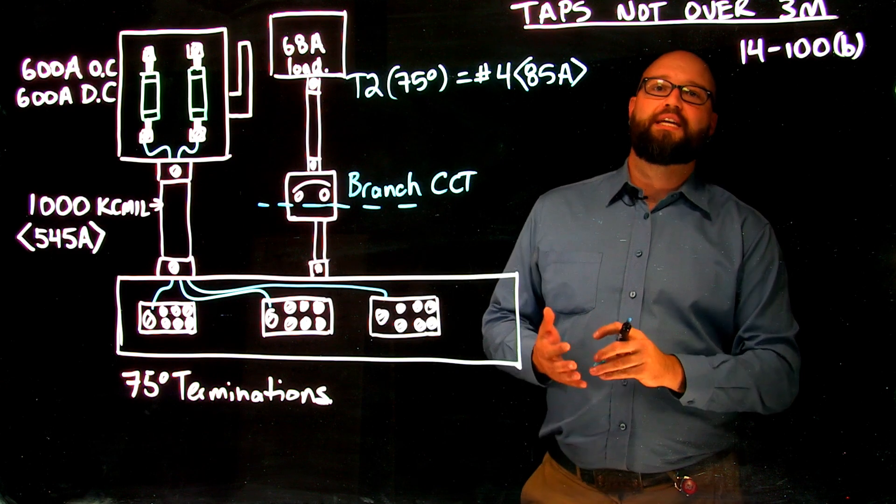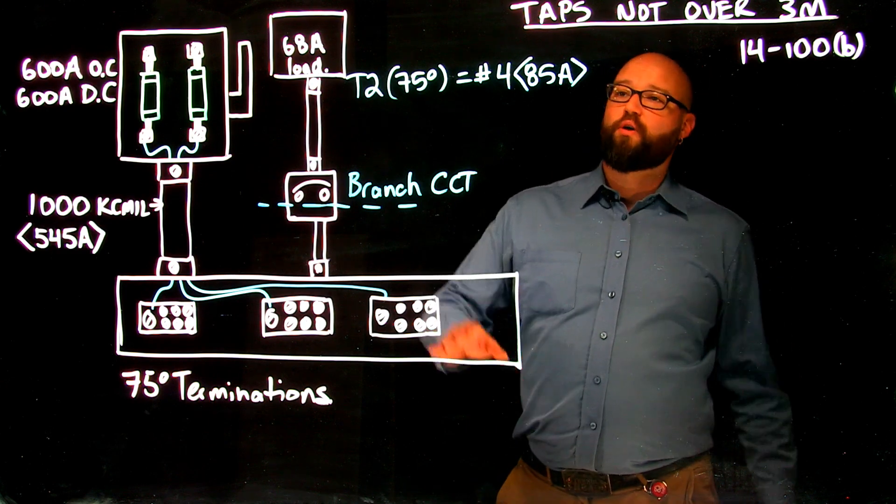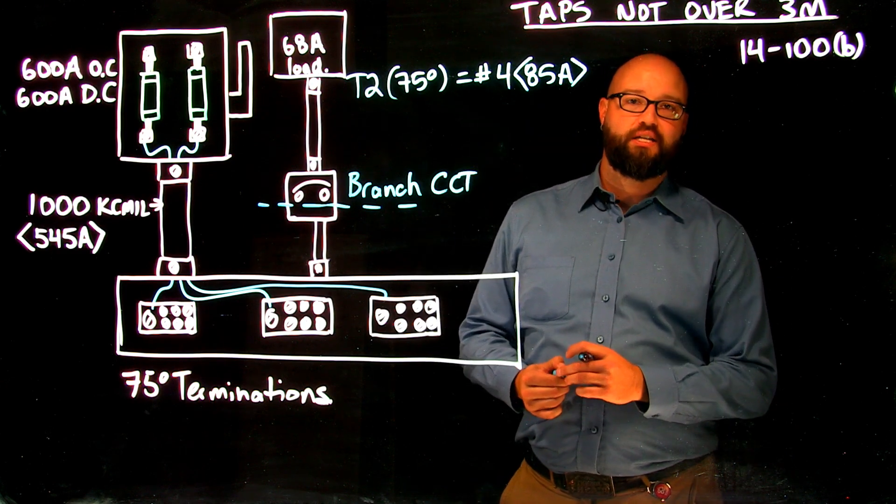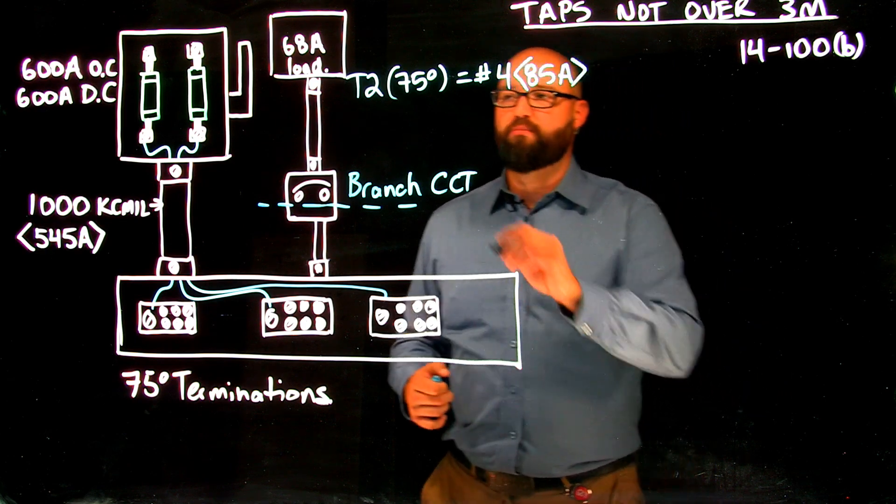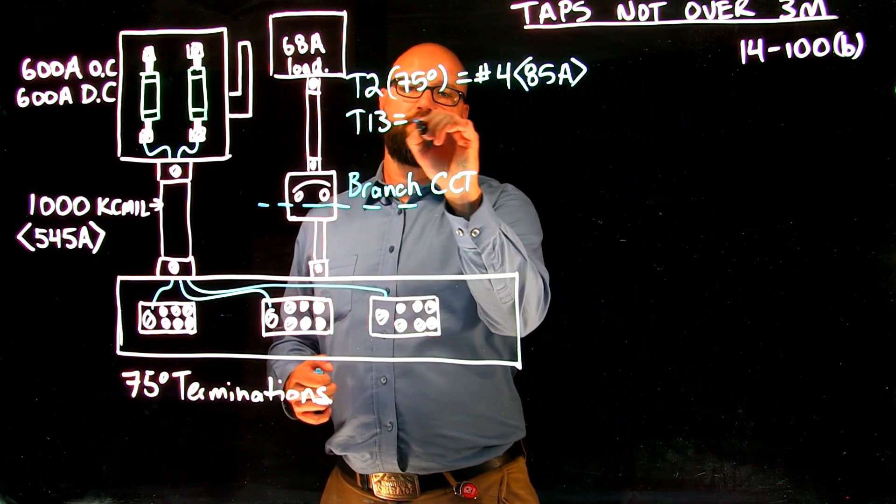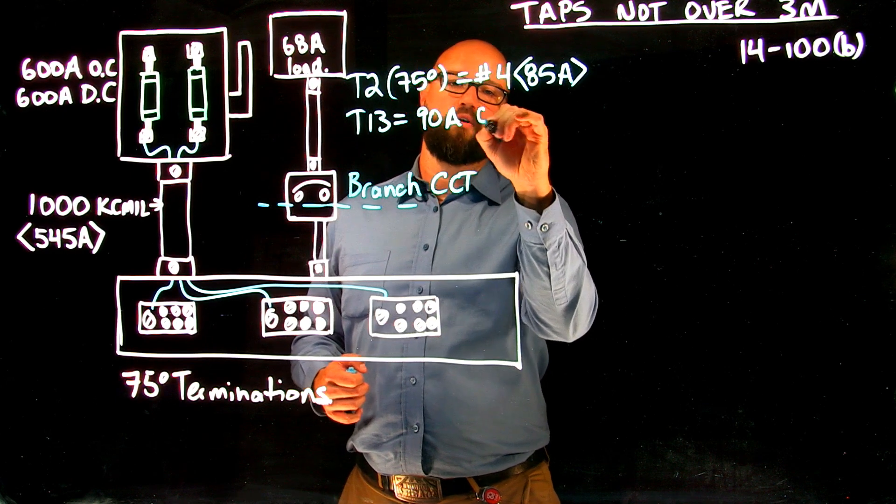And according to 14104, we are going to protect that 85 ampacity conductor with, from table 13, a 90 amp overcurrent.